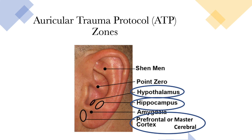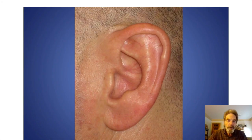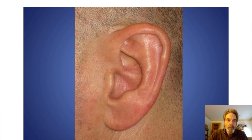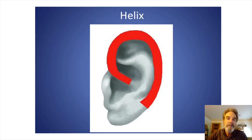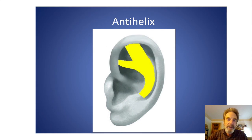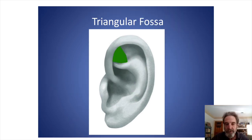Once you have learned the locations of the ATP points and zones, you can quickly determine the most effective place to put the needle. You are looking at a picture of a human ear. Learning the names for the specific anatomic features will be important so we can have a common language when discussing the locations of points and zones in the auricular trauma protocol. The first structure is the helix, which surrounds the ear. Next, the anti-helix, opposite the helix, comprised of a body, a superior arm, and an inferior arm. Together, the arms comprise the walls of the triangular fossa.